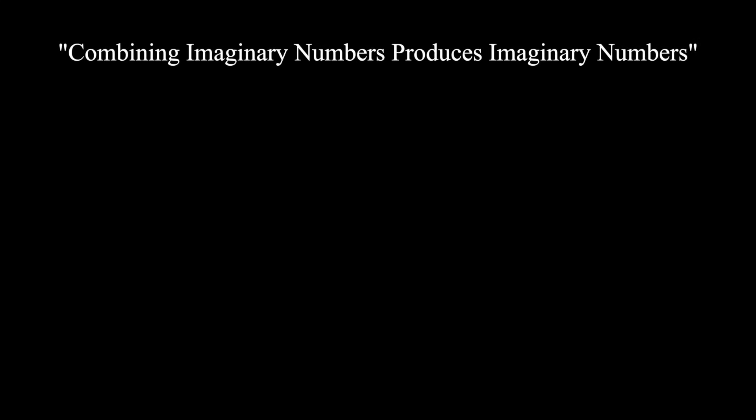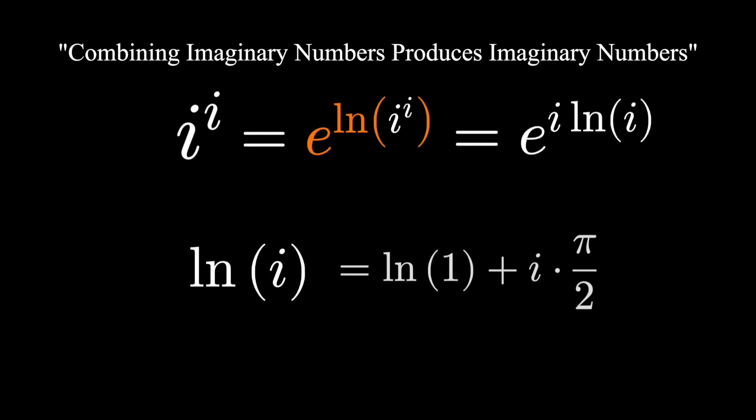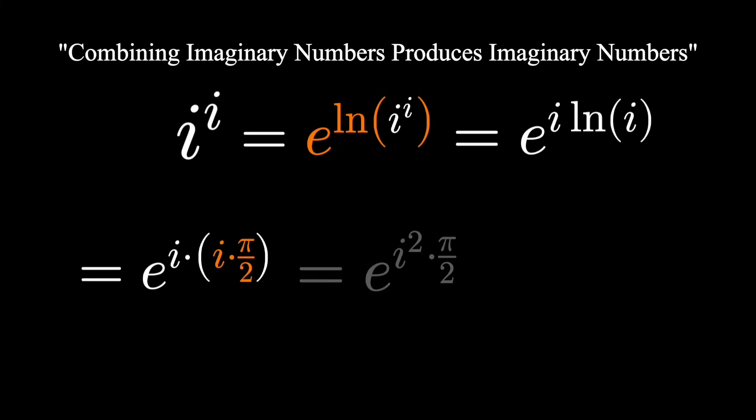When you look at complex numbers, numbers involving i, the imaginary unit, adding or subtracting two of them, typically combining them in any way produces another complex number. So certainly looking at something like i to the power of i, that's just gotta be complex, right? It has to have some imaginary part. It turns out, actually, that this number is a real number. So just because you're combining complex numbers doesn't mean the result will be complex.